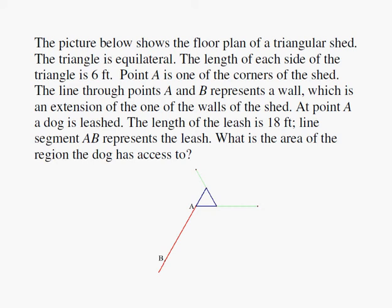Point A is one of the corners of the shed. The line through points A and B represents a wall which is an extension of one of the walls of the shed. At point A a dog is leashed. The length of the leash is 18 feet. Line segment AB represents the leash. What's the area of the region the dog has access to?